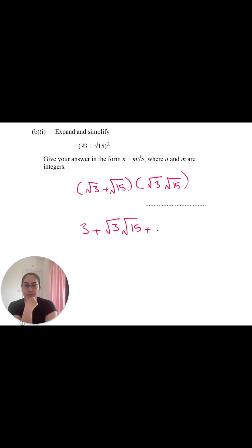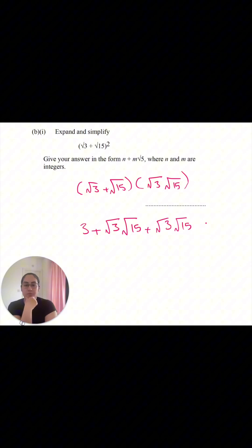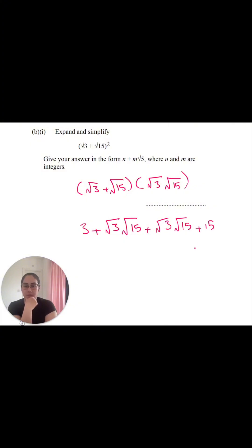Root 3 times root 15 is going to be root 3 root 15. Root 15 times root 3, so I'm going to add and it's going to equal to root 3 root 15. Once again, root 15 times root 15 is going to give us 15. Get rid of the square root and we've got 15.